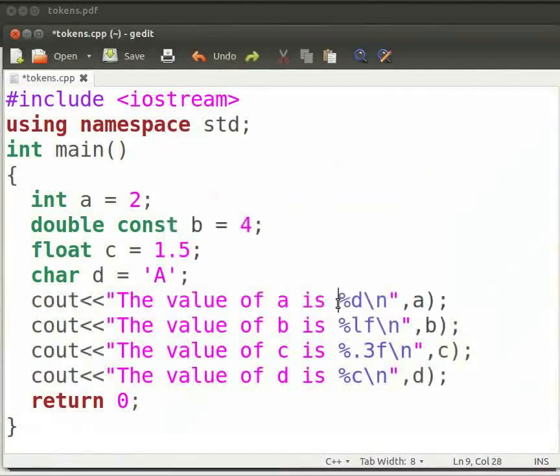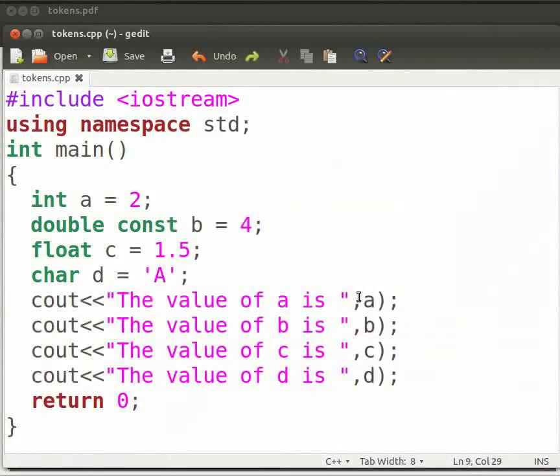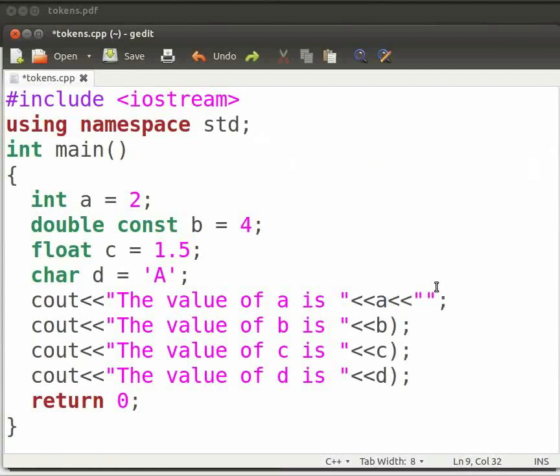We don't need the format specifier and backslash n. Let us delete them. Now delete the comma and type two opening angle brackets. And within the double quotes type backslash n. Now delete the closing brackets. Type two opening angle brackets again. And within the double quotes type backslash n. Now click on save.